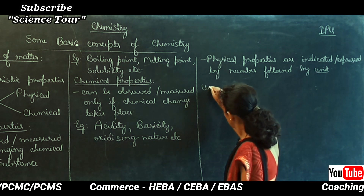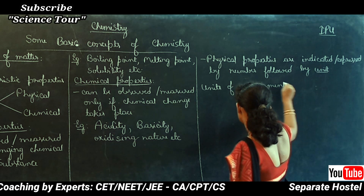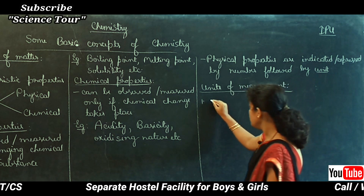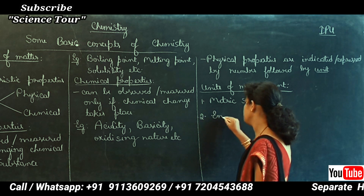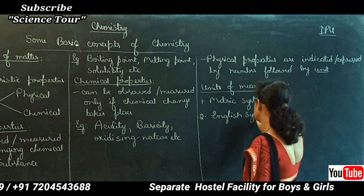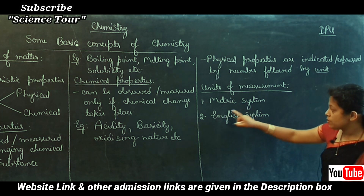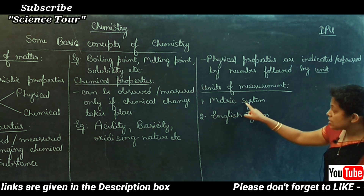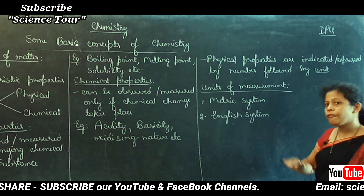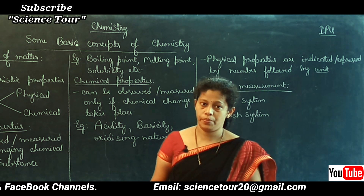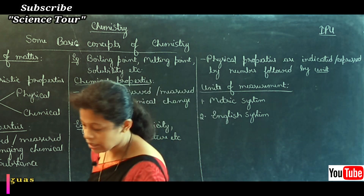Units of measurement — earlier, mainly two types of unit systems were used: the metric system and the English system. The metric system was given by France, and the English system is also called the British system. In different parts of the world, different units were used. In order to have common units of measurement, we now have the SI system.